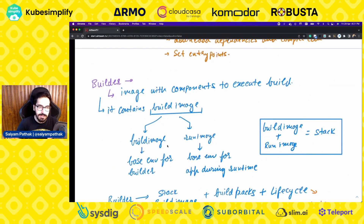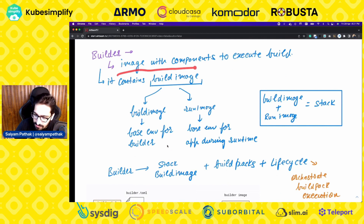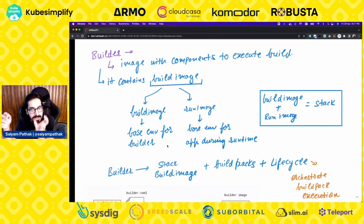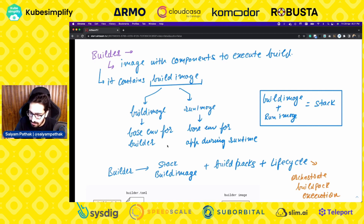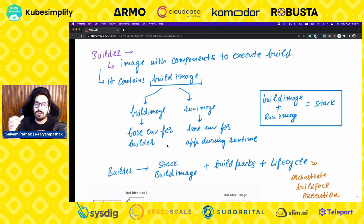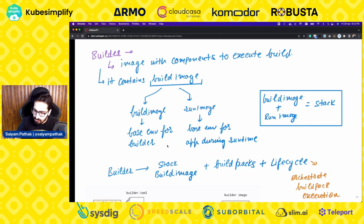The next concept is the builder. A builder is basically an image with components to execute the build. It consists of a build image — a base OS layer like Ubuntu — and a run image, which is the base environment for the app during runtime. When you combine the build image and run image, that is called a stack. Builder equals stack image plus Buildpacks plus the lifecycle.